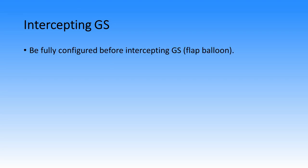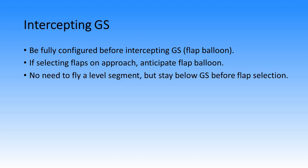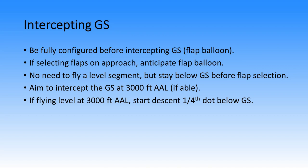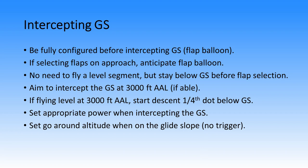To intercept the glide slope: it's best to be fully configured before intercepting, because adding flaps on approach causes the aircraft to balloon, increasing workload. If you do select flaps on approach, anticipate the balloon so you don't end up above the glide slope. There's no need to fly a level segment, but stay below the glide slope before flap selection. Aim to intercept the glide slope at about 3000 feet above aerodrome elevation if able. If flying level at 3000 feet, start descending about a quarter dot below the glide slope. Set appropriate power when intercepting — if speed is high, set thrust idle. Don't forget to set the go-around altitude once on the glide slope.